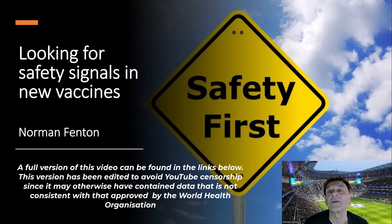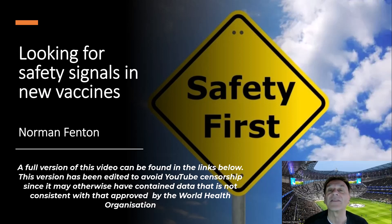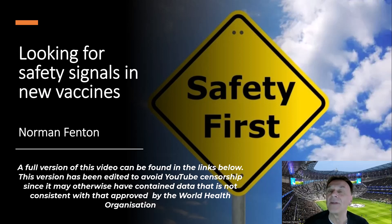A standard way to determine whether there's a genuine concern that a new vaccine might be causing a particular type of serious adverse events, such as myocarditis, is to compare the proportion of adverse event reports associated with the new vaccine that include myocarditis with the proportion that include myocarditis in all other vaccines. To get these numbers we need to look at a vaccine adverse event reporting system like VAERS.